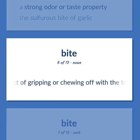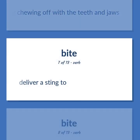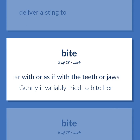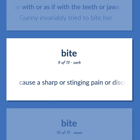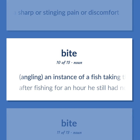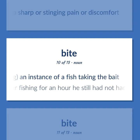The act of gripping or chewing off with the teeth and jaws. Deliver a sting to. To grip, cut off, or tear with or as if with the teeth or jaws. Gunny invariably tried to bite her. Cause a sharp or stinging pain or discomfort. Angling: an instance of a fish taking the bait. After fishing for an hour he still had not had a bite.